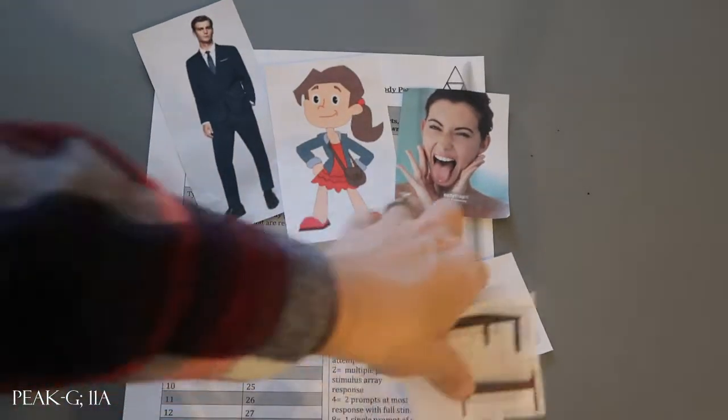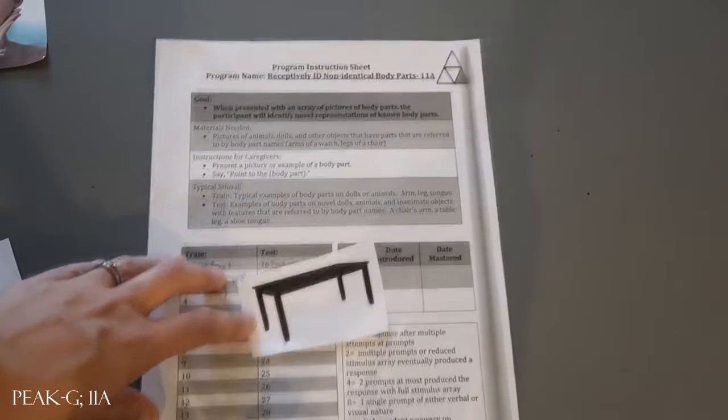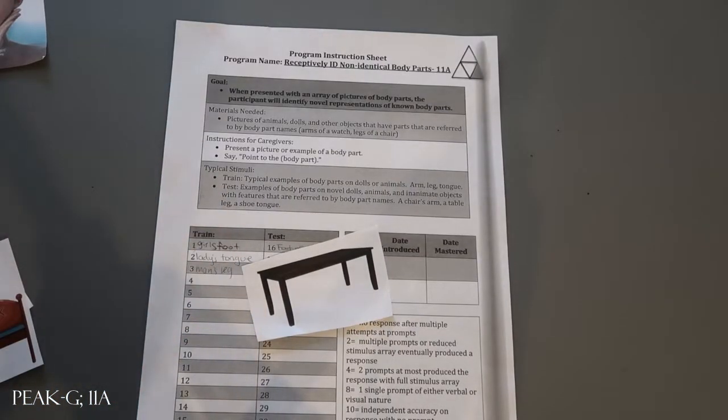So those were the 6 stimuli, 3 train and 3 test. To run this it's super easy. You're just going to put the picture in front of the participant and say point to the leg.